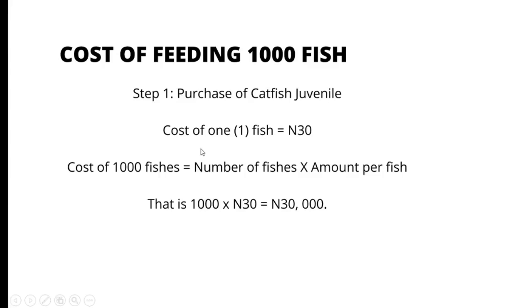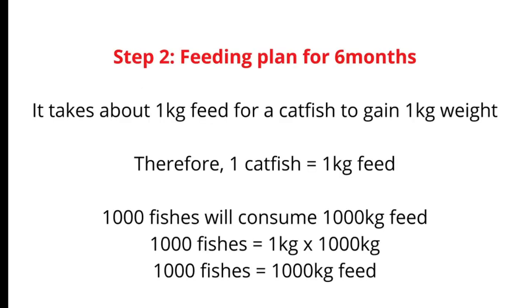So the cost of feeding 1000 fish — we are taking 1000 fish as an example. Step 1: Purchase of the catfish juvenile. For example, you are dealing with catfish juveniles and you decide to purchase 1000 fish. The cost of each fish is 30 Naira for example. So the cost of 1000 fishes equals the number of fishes times the amount per fish — that is 1000 times 30 — which gives you 30,000 Naira right from the purchase of the seed.